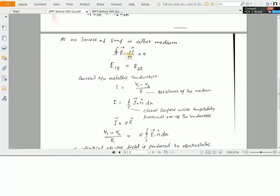As we know that no source of EMF exists in the medium, the closed integral of E dot dL must be equal to zero. We have learned in chapter 3 how to solve this equation and find the relation E1T is equal to E2T. This is known as the tangential part of electric field in region 1 must be equal to tangential part of electric field in region 2. This equation is valid for both systems, either the system with electrostatic or in a steady state condition.